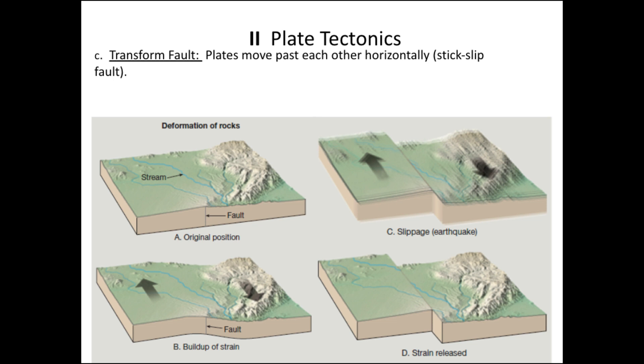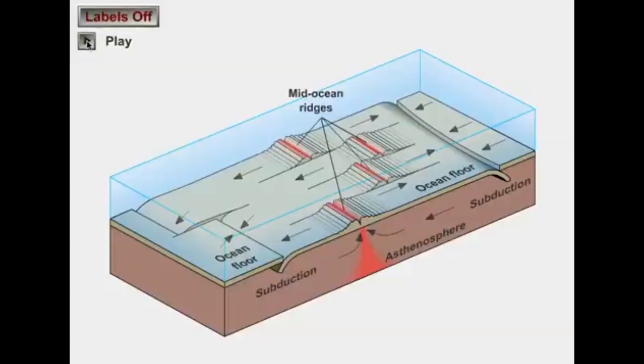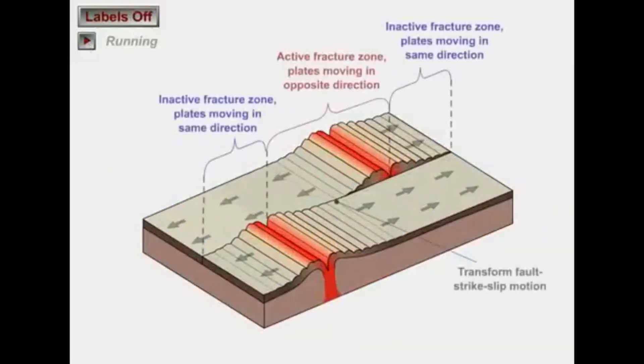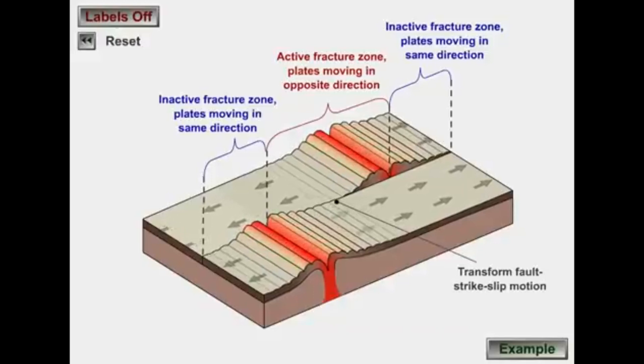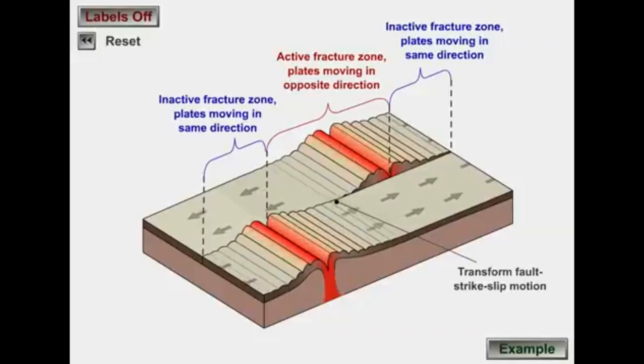The last type of plate boundary is a transform fault boundary, where plates are simply moving horizontally past each other like cars on a road. They interact enough to cause earthquakes. The most common location for these transform faults is actually on the ocean floor, where divergent boundaries like the mid-ocean ridge are offset rather than continuous. On one side of the offset everything moves one direction; on the other side it moves the opposite direction. That opposing horizontal motion is the definition of a transform fault.